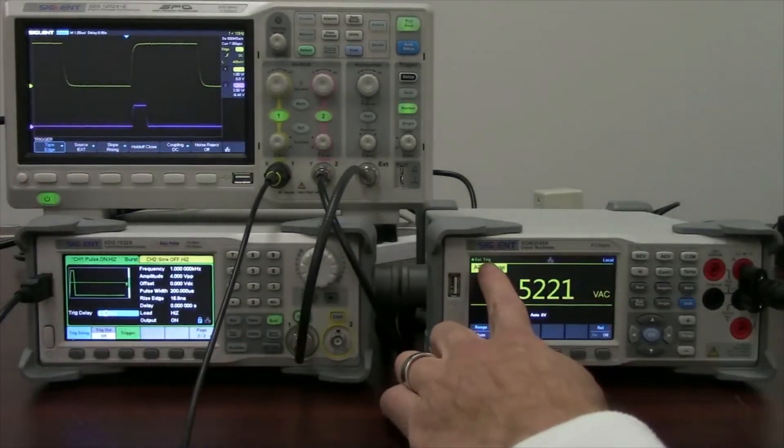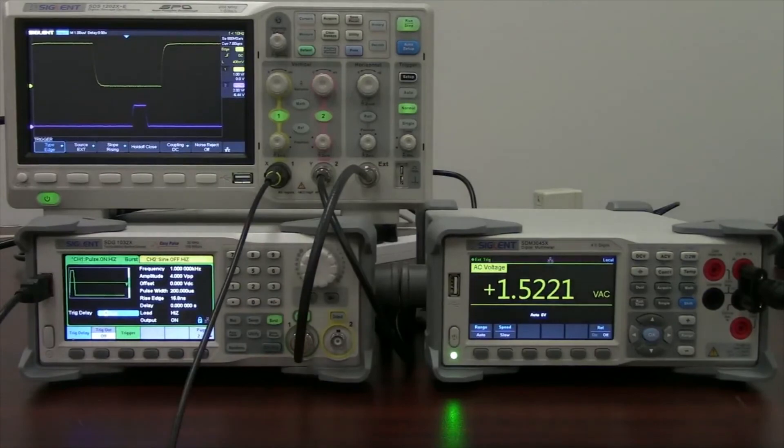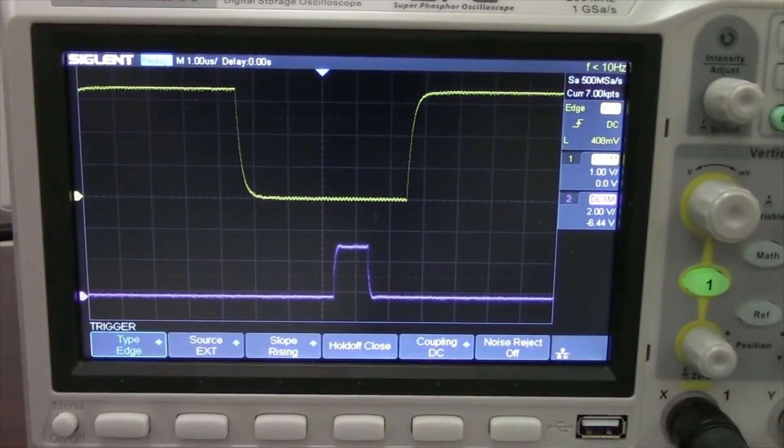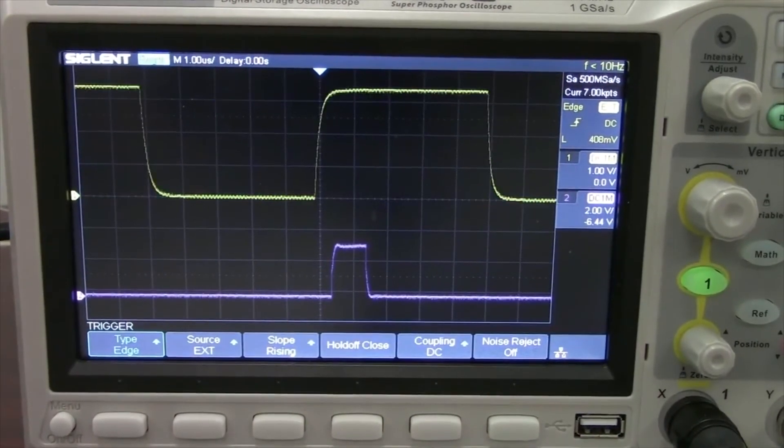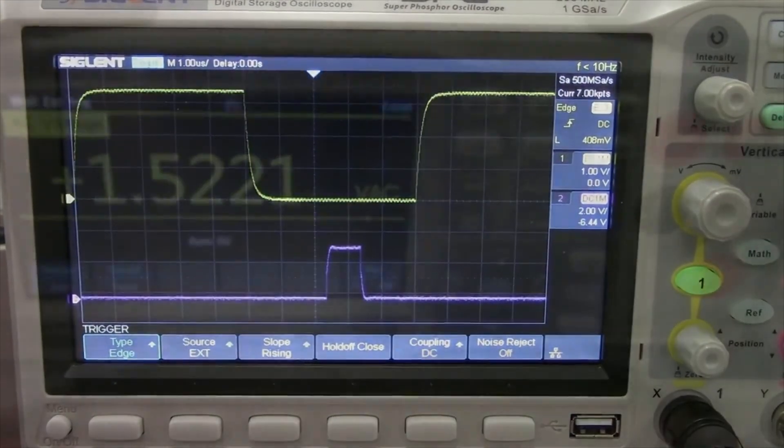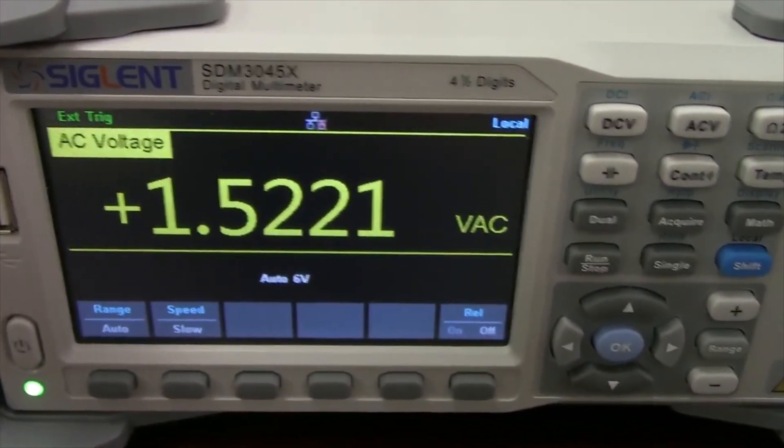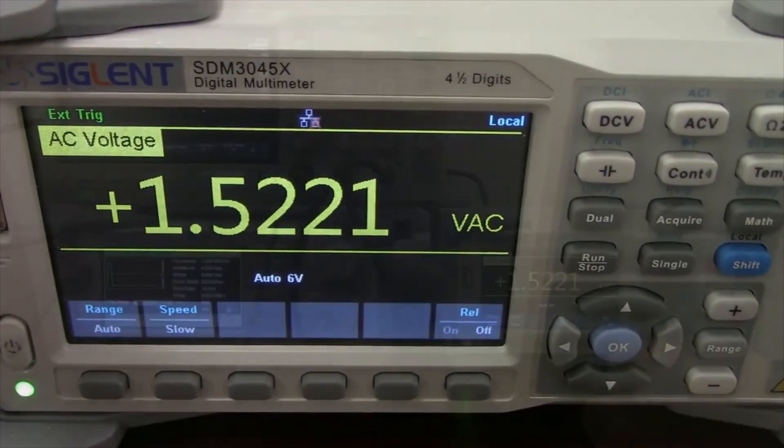But I'll perform that again. Pressing the trigger button, you'll see we actually get external trigger here. And you can see that indicated by the trigger indication up at the top of the screen here on the scope. And as we go over to the multimeter, you can also see that we are getting its external trigger. So it is also triggering and making a measurement.